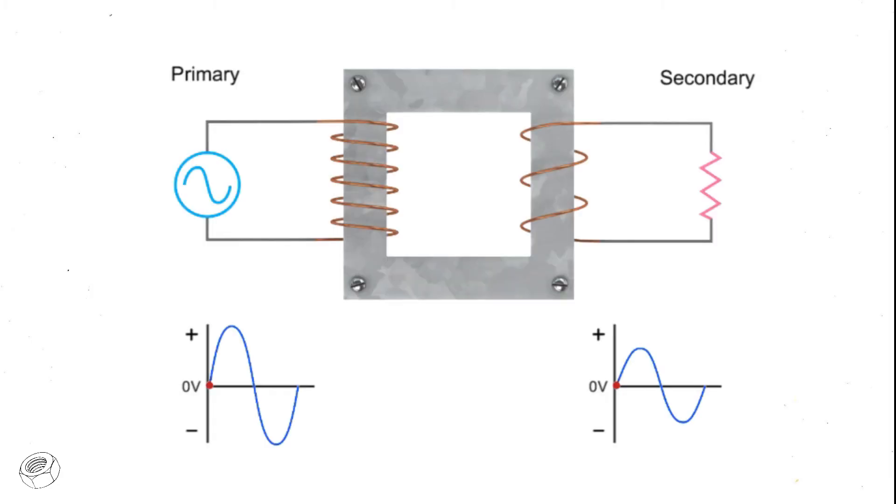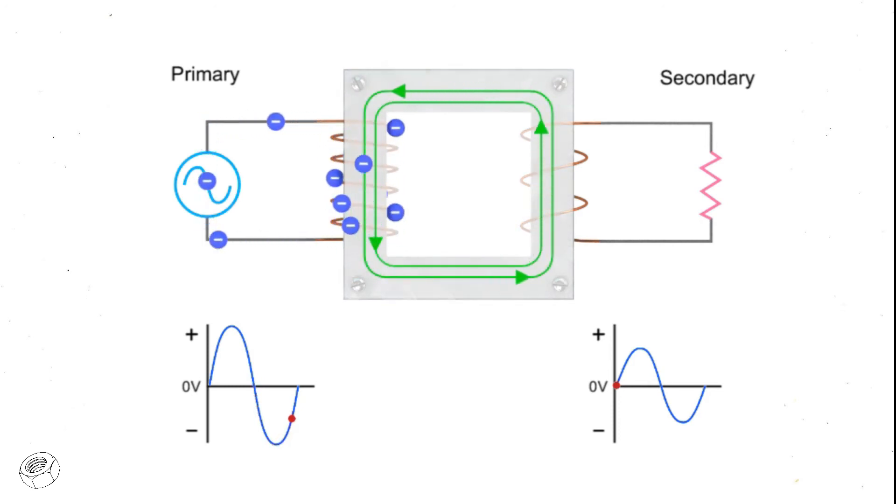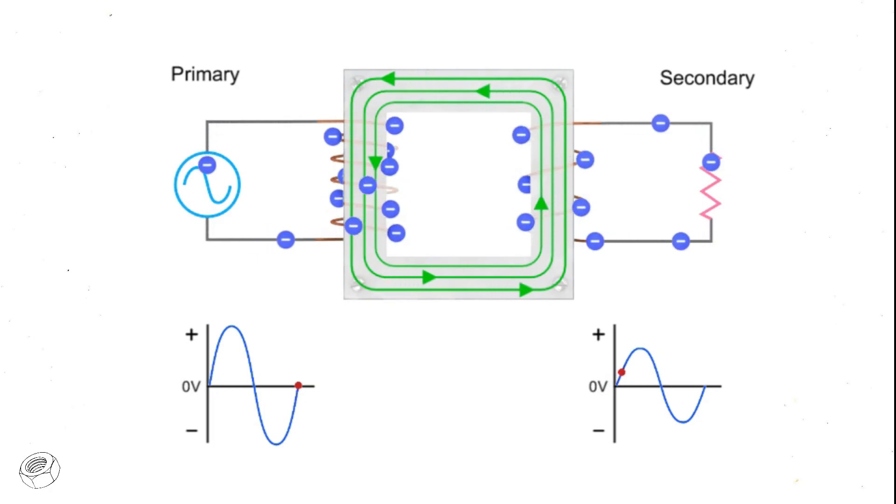The constantly changing current driven by an alternating voltage source induces a changing magnetic field in the core of the transformer. The magnetic field created by the alternating current in the primary coil generates the flux in the transformer core. The secondary coil converts the flux back into current flow and produces a voltage at the load or resistance in the secondary circuit.